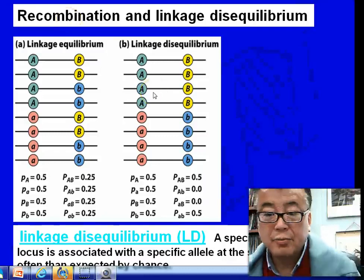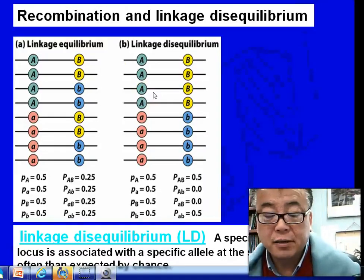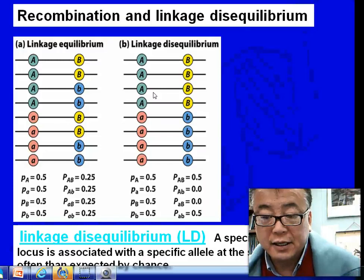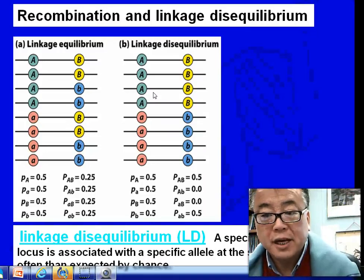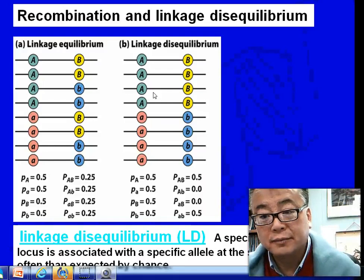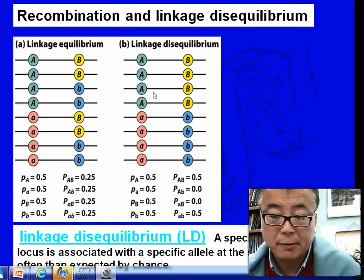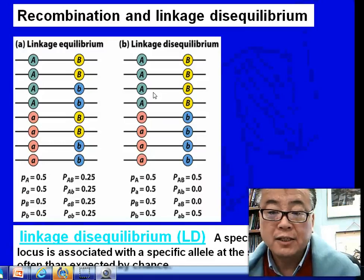Welcome back. Now we continue the discussion on population genetics. Here we're going to use another measure to represent population genetics — another important concept which is the cause of variation caused by linkage disequilibrium.